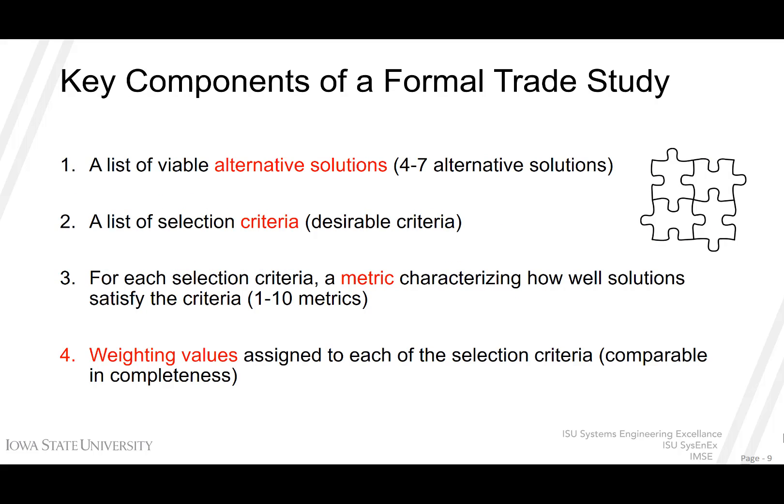When conducting a formal trade study, there are several key components that should be included. First, list all the viable alternate solutions — even if you have one preferred solution identified up front, it is good to list and share alternate solutions to show transparency and the depth of the analysis conducted. From there, identify your selection criteria — what the ideal solution would contain. For each criterion, identify a metric characterizing how well those solutions satisfy it, typically on a 1 to 10 scale, where 1 means does not meet at all and 10 is optimal and ideal. Then weight the values assigned to each selection criterion. You may pick criteria that are not treated equally.